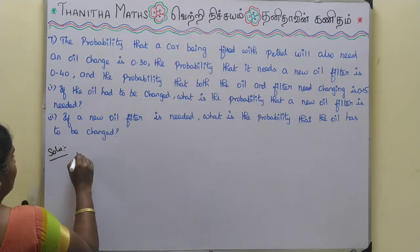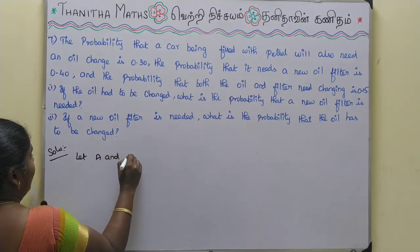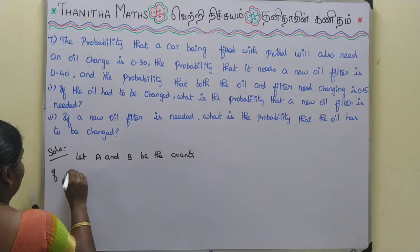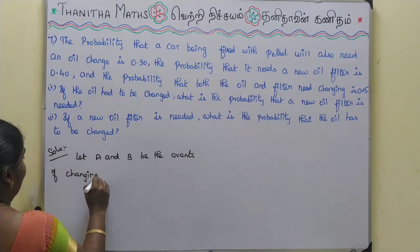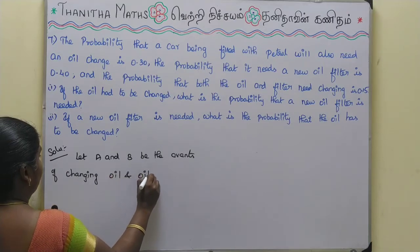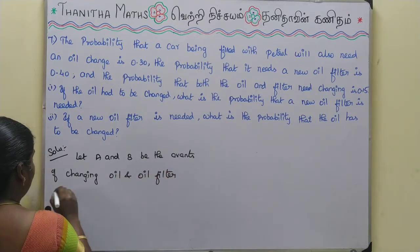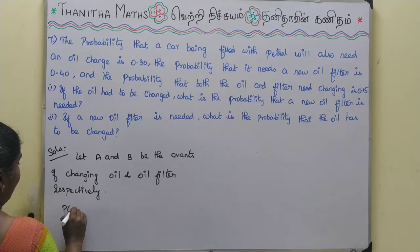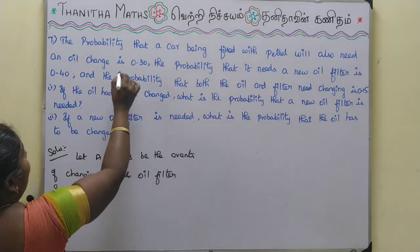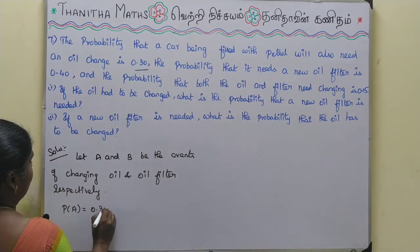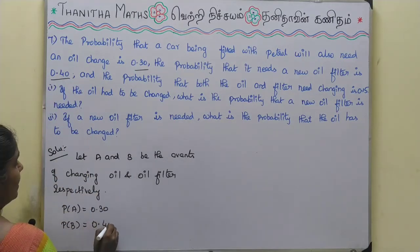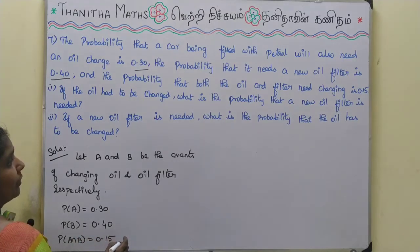Let A and B be the events of changing oil and oil filter respectively. P(A) = 0.30, P(B) = 0.40, and P(A ∩ B) = 0.15.